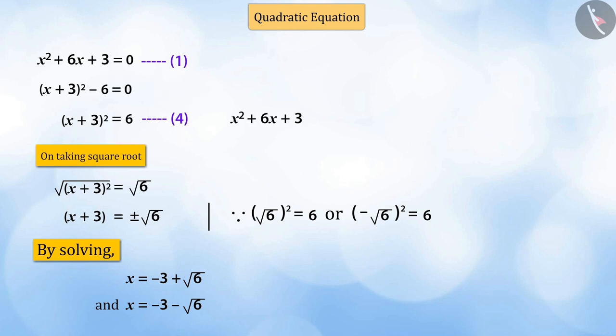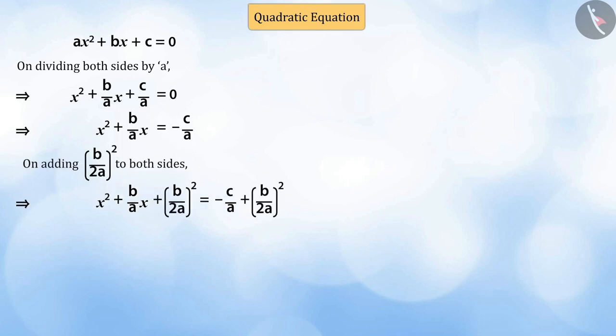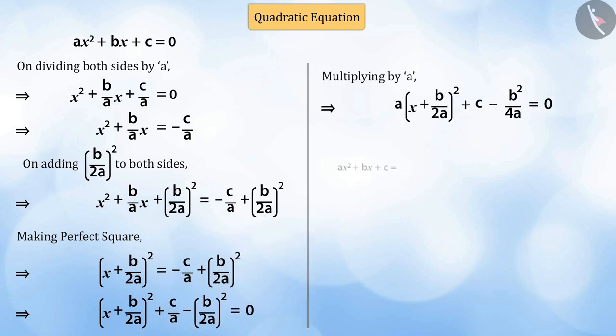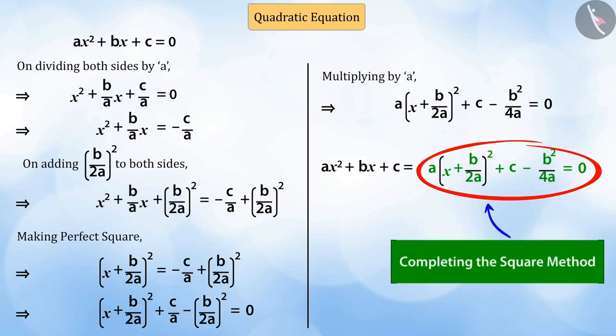Thus, we have found the root of the given quadratic equation by expressing it in the form x plus 3 the whole square minus 6 equal to 0. In the same way, we can solve any quadratic equation by converting it to the term minus b square by 4a into a perfect square and finding the solution of a multiplied by x plus b by 2a the whole square plus c minus b square by 4a equal to 0. This method is known as completing the square method.